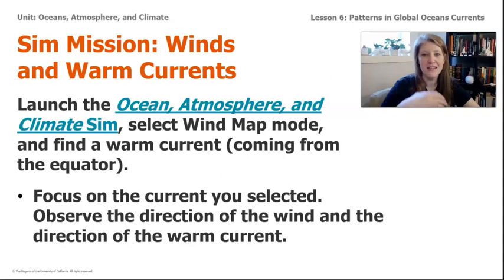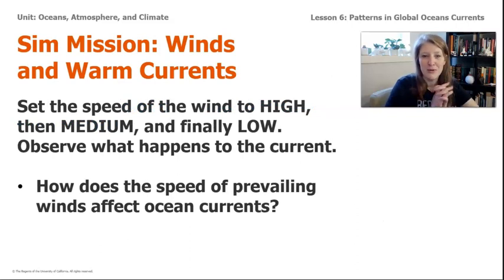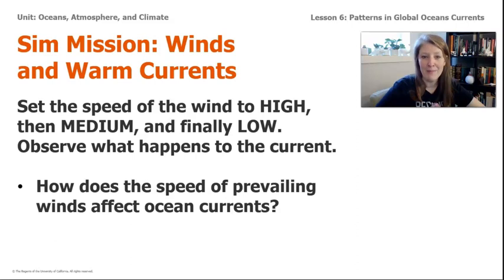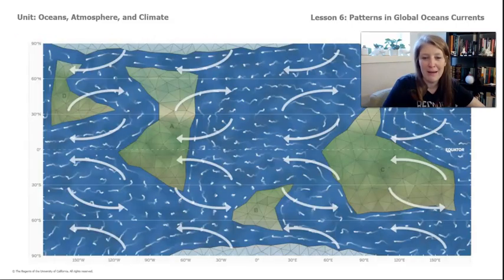After recording those observations, set the speed of the wind to high, then try it at medium and then low, and observe what happens to the current. How does the speed of the prevailing winds affect the ocean currents? This is what the Wind Map Mode will look like — go explore and then come back and we'll discuss what we learned.